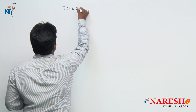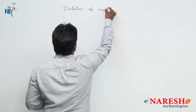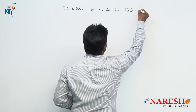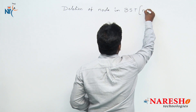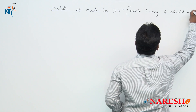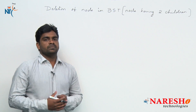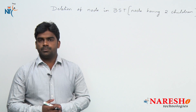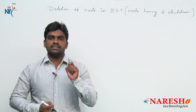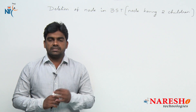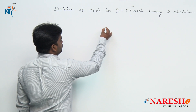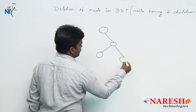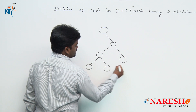Deletion of a node in a binary search tree where the node is having two children. There are so many possibilities. Already we discussed in previous sessions very clearly. If you want to delete a node that is having two children, we are taking some of the nodes as an example.